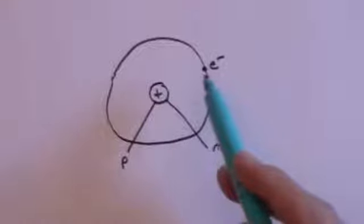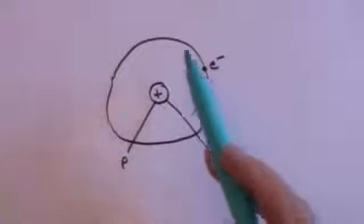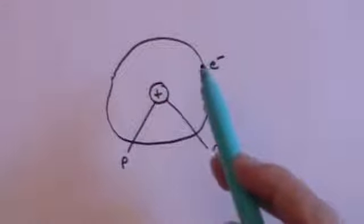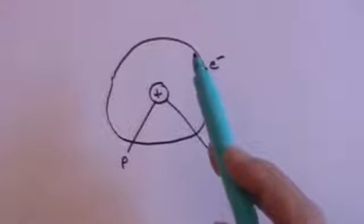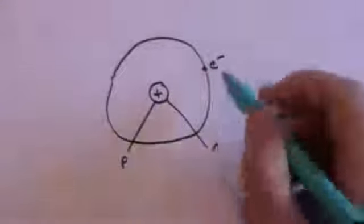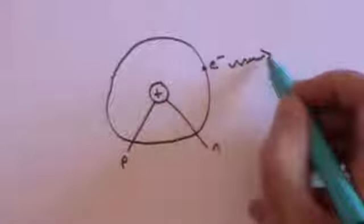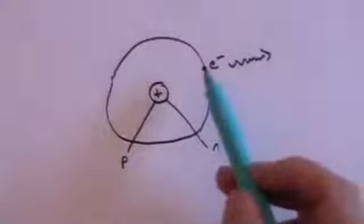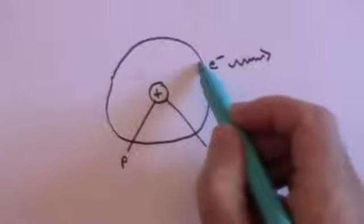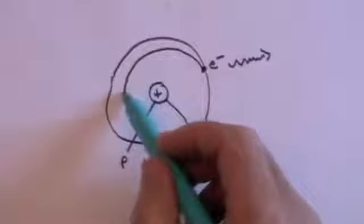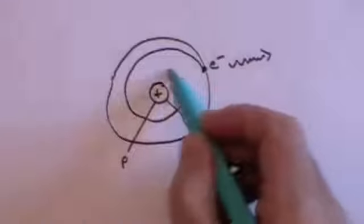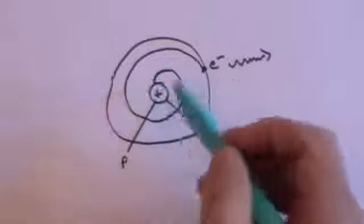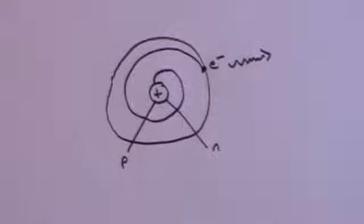The second problem with this model is this orbiting electron, because if it's orbiting then it's accelerating. It may not be changing its orbital speed but it is certainly changing direction, and that amounts to acceleration. We know that an accelerating charged particle gives off radiation, and if a charged particle gives off radiation it loses energy. So if this electron is losing energy, the only thing it can do is go into a smaller orbit — it keeps spiralling, losing energy, until it spirals into the nucleus where it just annihilates and the atom self-destructs.